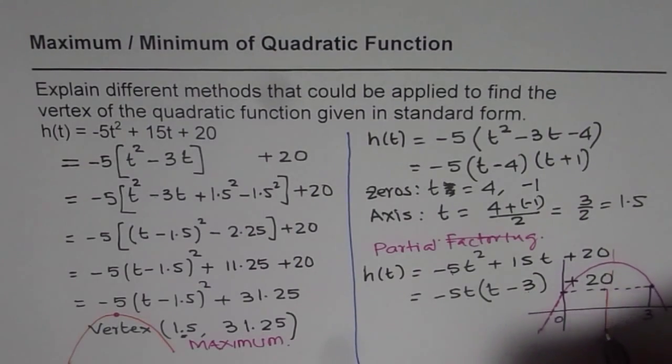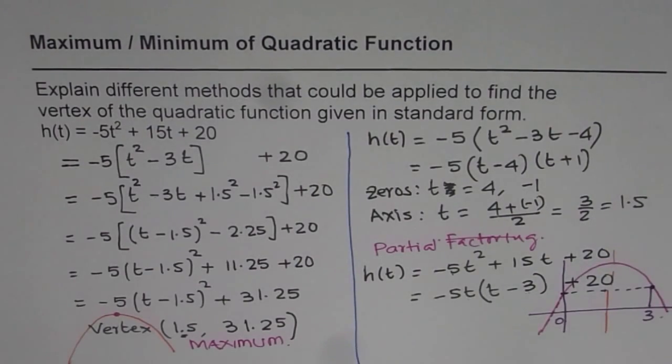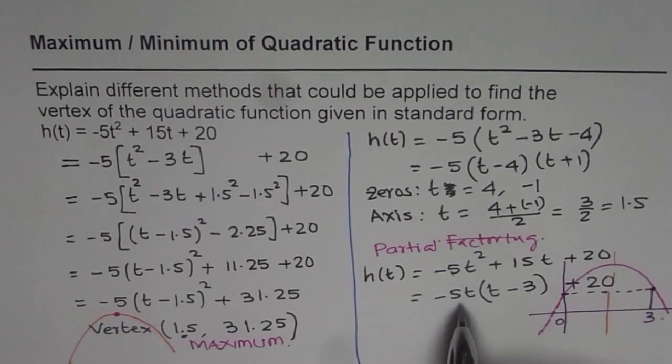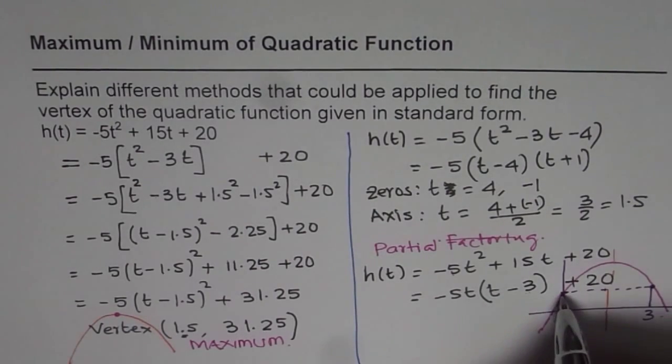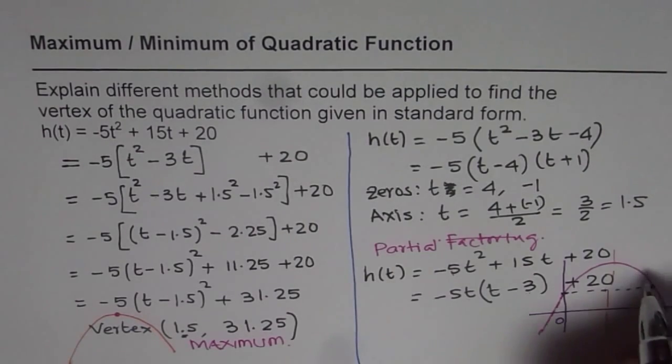So if I find the mean value of these two I get the axis. So from here after partial factoring we know two points which are symmetric. We say the y intercept and the image. So this point is referred to as image.